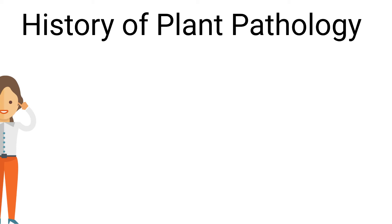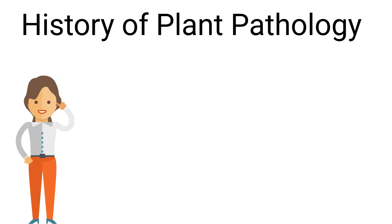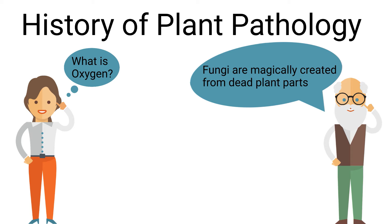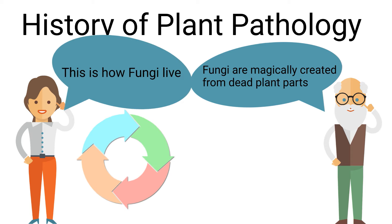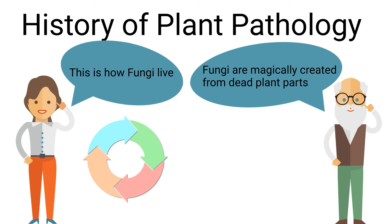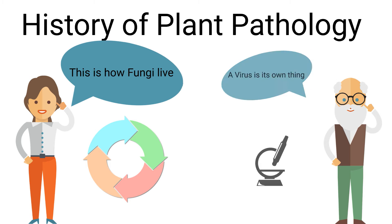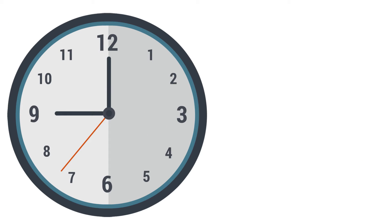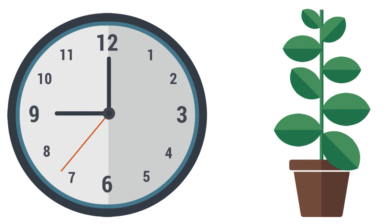We've come a long way from not knowing about oxygen or that fungi spread from spores, to mapping the entire life cycle of pathogens and using electron microscopes to look at viruses. Here are some quick examples of important people and events in the history of plant pathology.